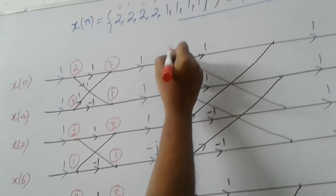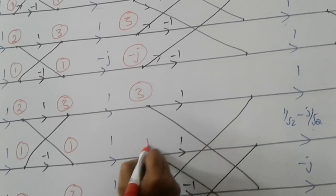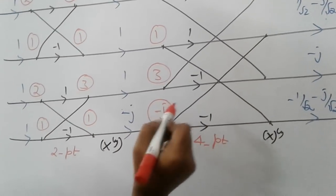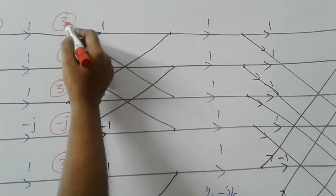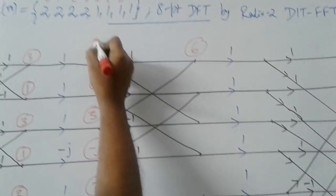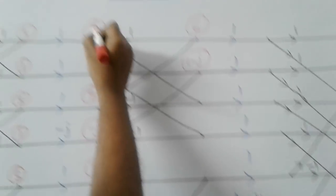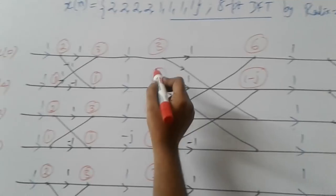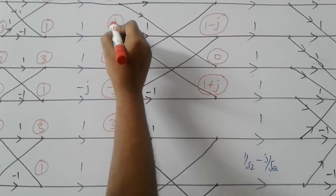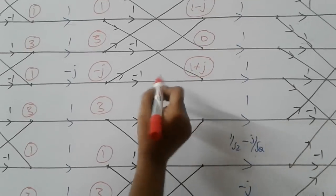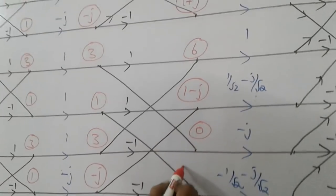Same thing A plus B, A minus B. Since we have the same numbers throughout, we will have the same values. Then output of the first stage multiplied by the phase factor we give the input to the second stage. 3 into 1, 3. 1 into minus j, minus j. Since 4-point, A1, A2, B1, B2. This point is A1 plus B1, 6. This is 1 plus minus j, 1 minus j. A1 minus B1, 3 minus 3, 0. A2 minus B2, 1 minus of minus j, 1 plus j.